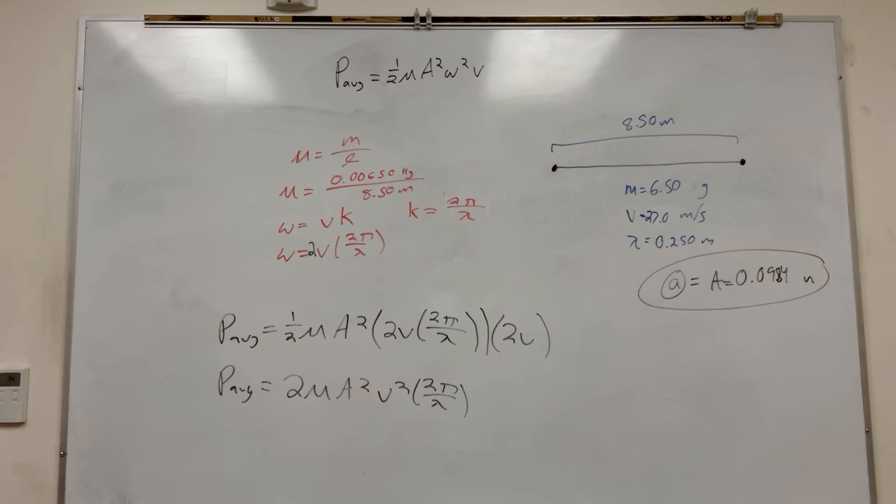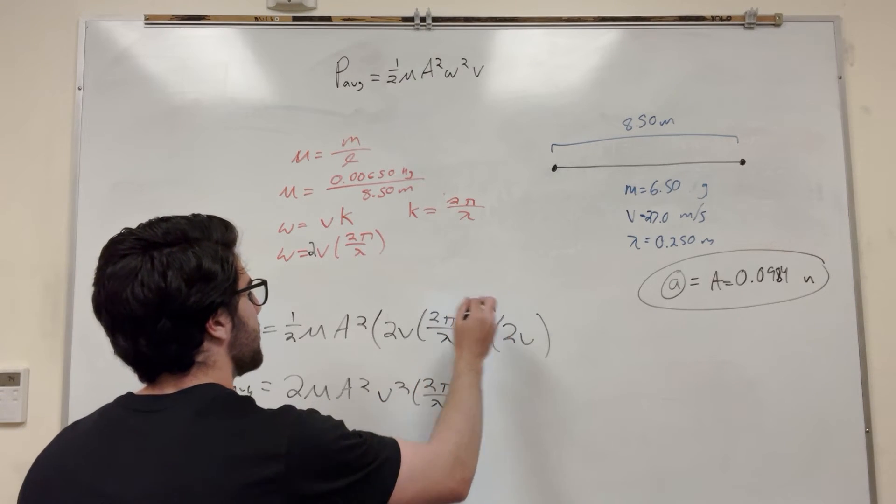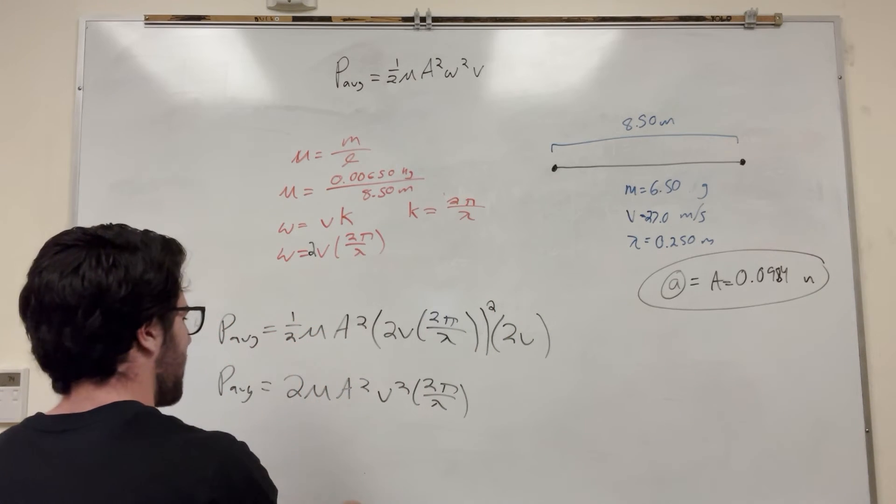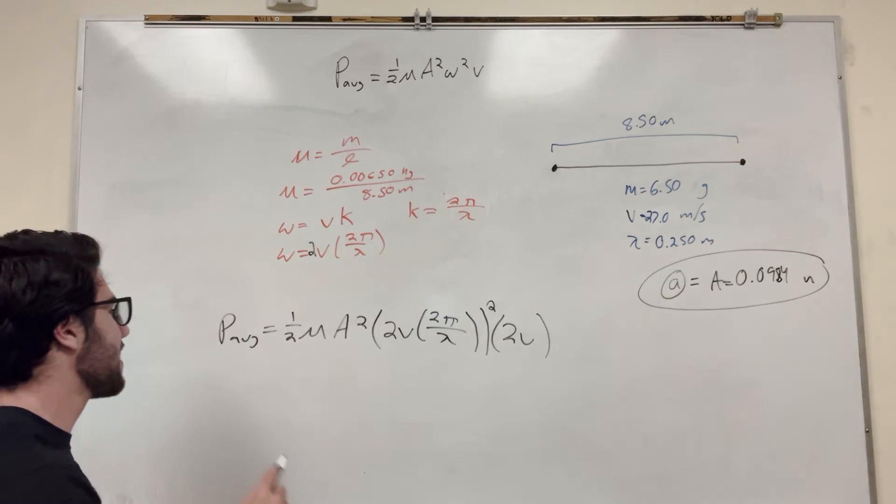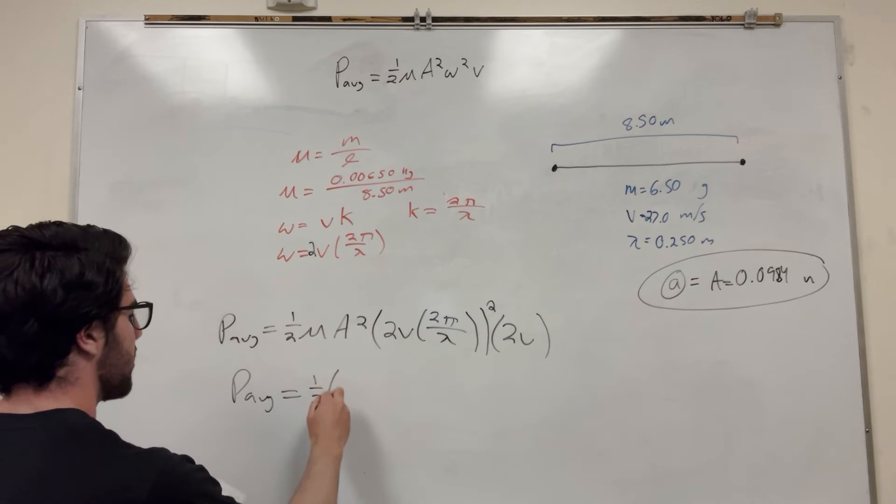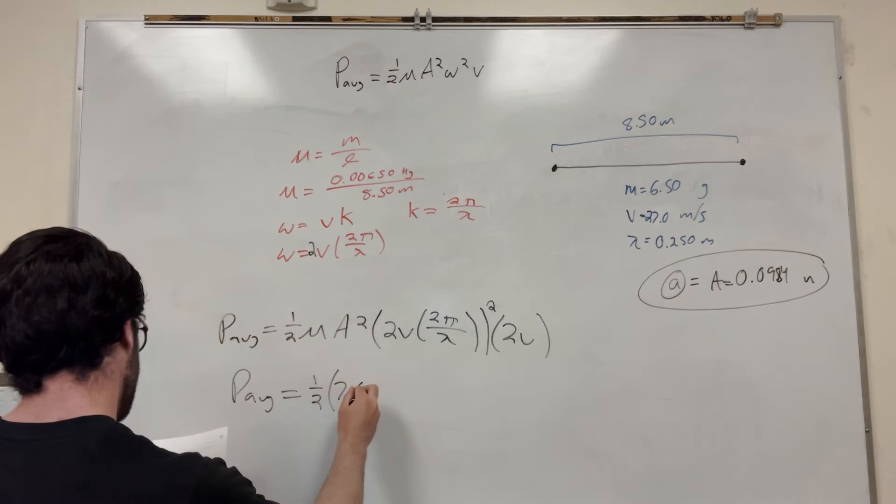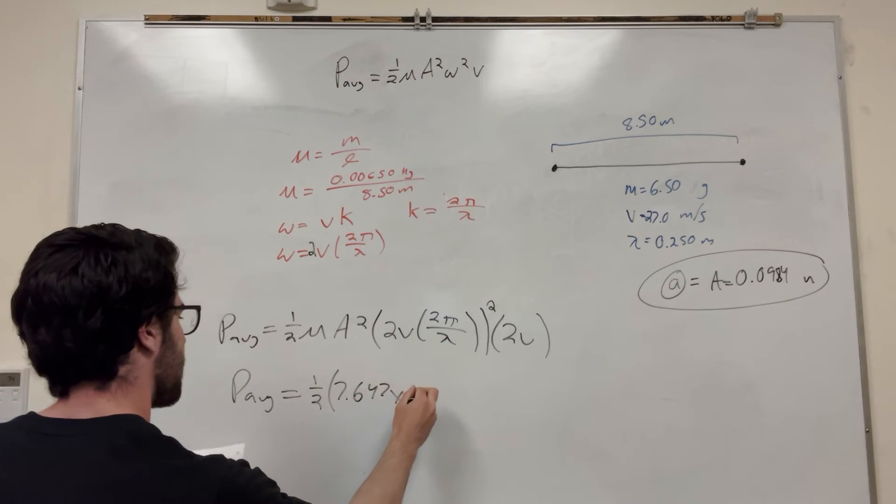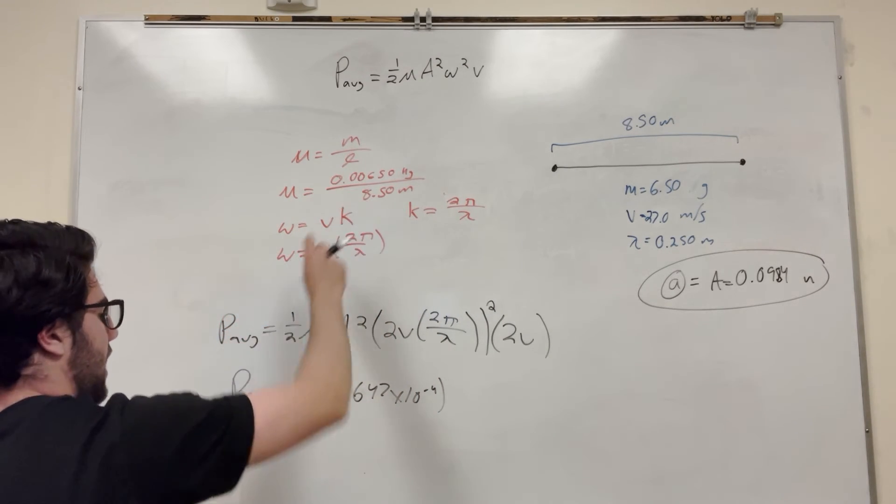I hope I did that right. Oh no, I didn't do that right because I forgot to square this. Okay, hopefully I didn't confuse you too much with that. I'm just going to plug it in with this. You don't have to do all this, you just plug in the numbers. So power average, let's just plug in what we know. 1 half, mass per unit length—it's that small number again—so that's 7.647 times 10 to the negative 4.